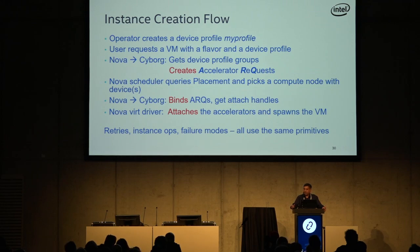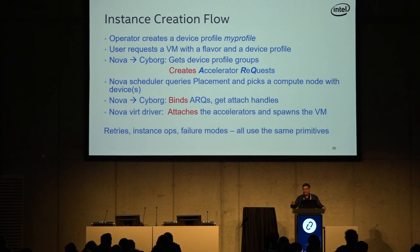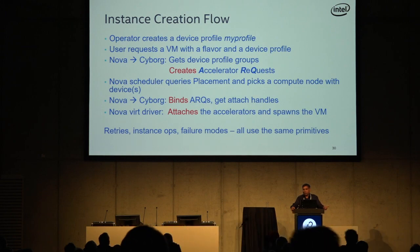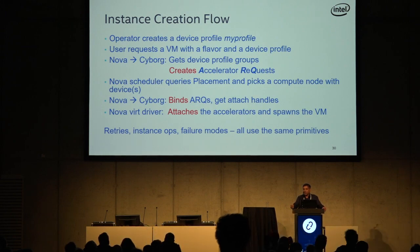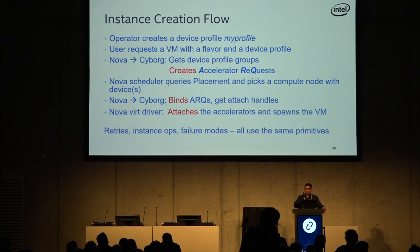At some point, when the instance is about to be launched, Nova calls into Cyborg to make sure all the ARQs are ready — programming is done, GPU is configured, everything is ready to go. At that point, the Nova virt driver can attach the accelerators to the VM. What Cyborg returns back to Nova after binding is essentially what you could call an attach handle — like a PCI-VF, for example, or a mediated device UUID. That's what gets composed by the virt driver into the VM's domain XML.